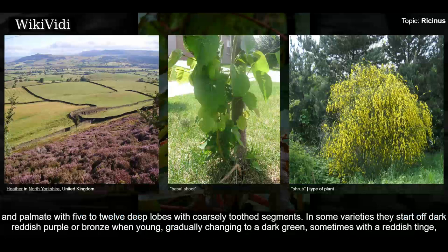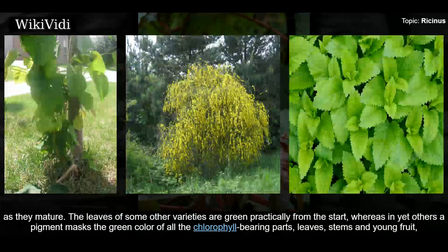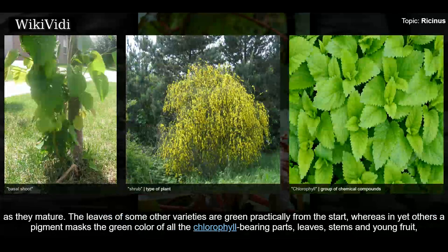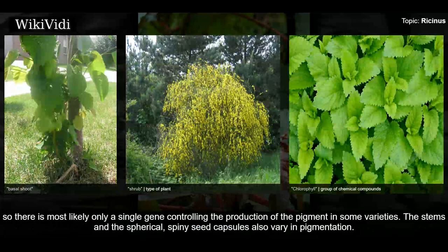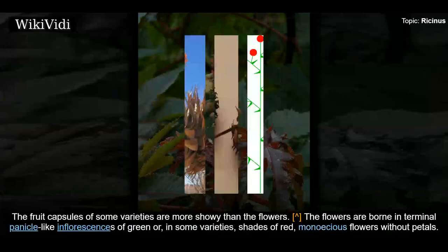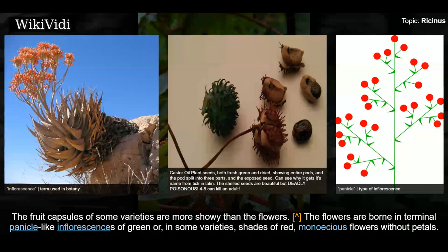In some varieties, leaves start off dark reddish purple or bronze when young, gradually changing to a dark green, sometimes with a reddish tinge as they mature. In yet other varieties, a pigment masks the green color of all the chlorophyll-bearing parts — leaves, stems, and young fruit — so that they remain a dramatic purple to reddish brown throughout the life of the plant. Plants with dark leaves can be found growing next to those with green leaves, suggesting only a single gene controls the pigment production. In some varieties, the stems and spherical spiny seed capsules also vary in pigmentation, and the fruit capsules of some varieties are more showy than the flowers.